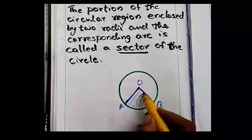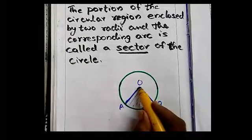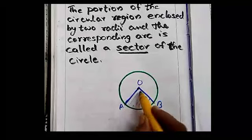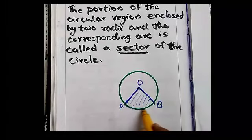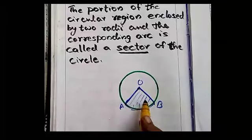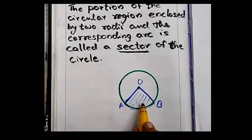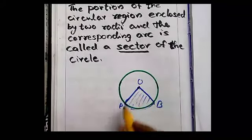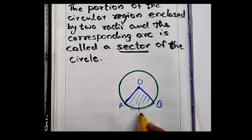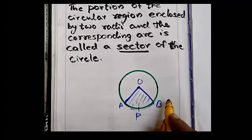You can see the area — the portion enclosed by OA, OB, the two radii, and the corresponding arc. This portion is sector OAPB, where P is a point on the arc.